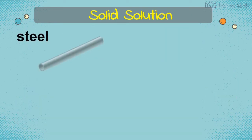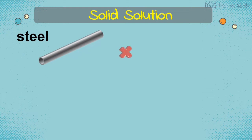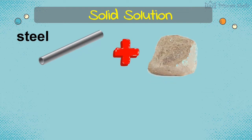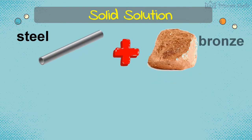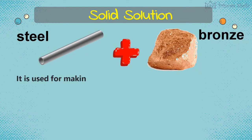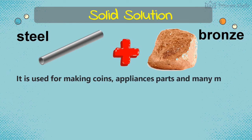Another example of a solid solution is the steel and bronze combination, which is used for making coins, appliances, parts, and many more.